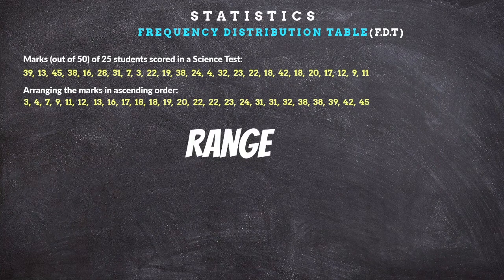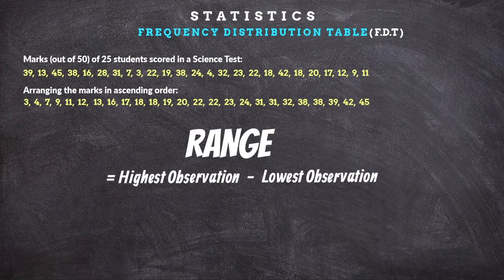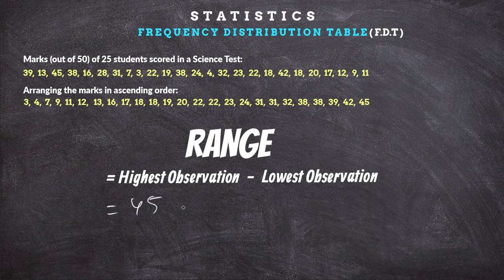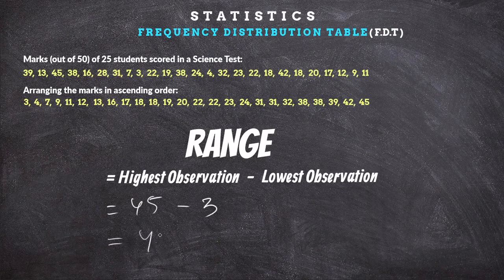This is the range. The range is the difference between the highest observation and the lowest observation. The observation here is marks. In the range, there is a difference between the highest mark and the lowest mark — highest mark minus the lowest mark.